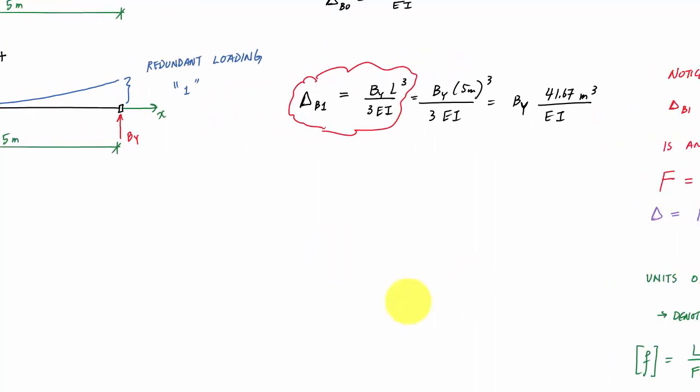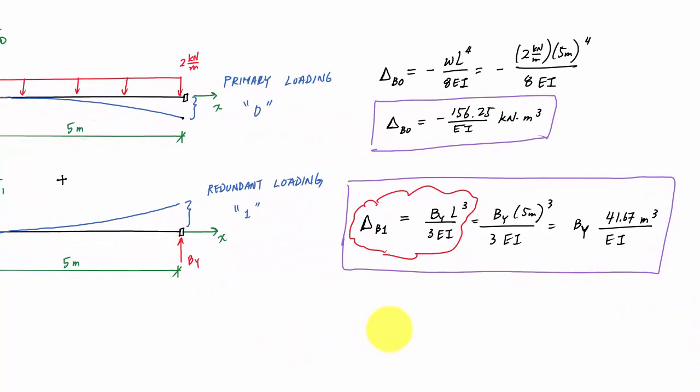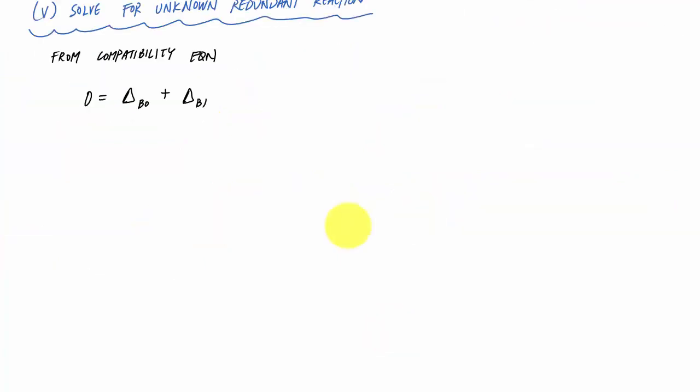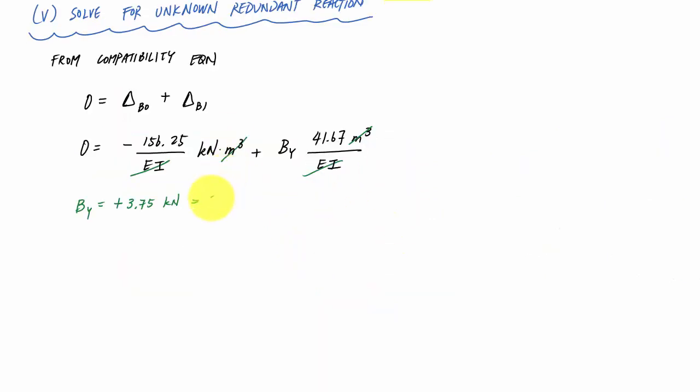So we have the deflections here. We have this delta B zero and this for delta B one right here. And so now we just plug that back into our compatibility equation and solve for that unknown BY. So now I plugged and chugged and now I can solve. And you'll notice that the EI, I can multiply through both sides of the equation by EI. How convenient. I can divide through by meters cubed and all those units cancel out. So I should be left with units of kilonewtons. And when I solve for BY here, BY is positive 3.75 kilonewtons. And that positive just means that in the original drawing way back here, my free body diagram, that positive result means that this direction that I chose for BY, this pointing upwards is good. And that means BY is 3.75 kilonewtons pointing upwards. And so we've got BY.